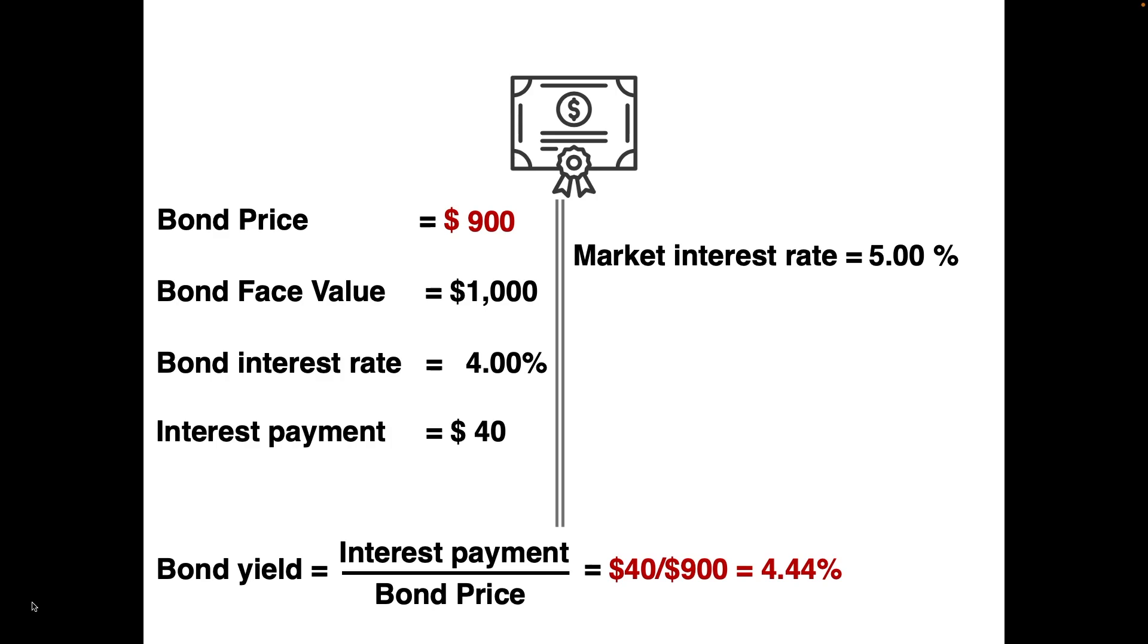We can assume that the bond yield will fluctuate with the market interest rate. To calculate the bond price, we use the same equation but solve for bond price: bond price equals interest payment divided by bond yield. For the bond yield, we use the market interest rate—we let the yield flow according to the market interest rate.